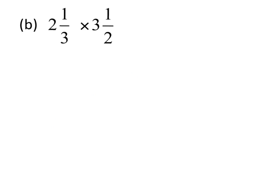Question 1b is again two mixed numbers, but this time we are going to multiply. In order to do that we need to first make them top-heavy fractions. So we have 2 and one third: multiplying the 2 by the 3 gives us 6, and adding the 1 on top makes 7 thirds.